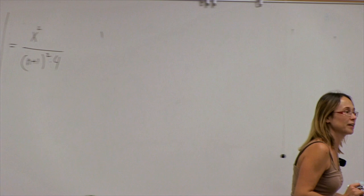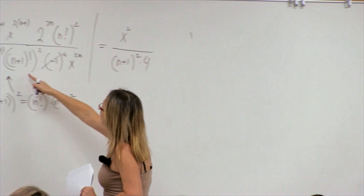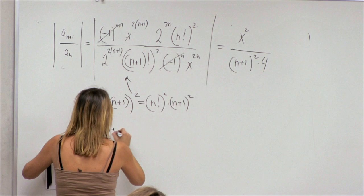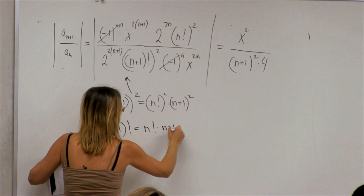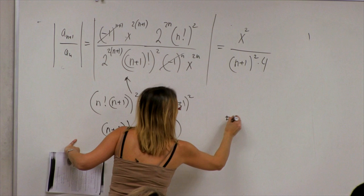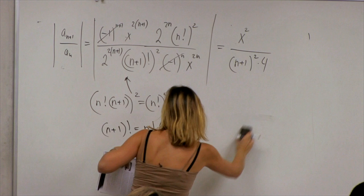After simplifications, we get x² / (4(n+1)²). A student asks about the factorial step: n+1 factorial equals n factorial times n+1. For instance, 5! = 4! × 5. Then we square that, and the n! squared cancels, leaving (n+1)².